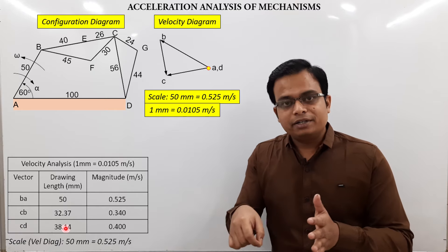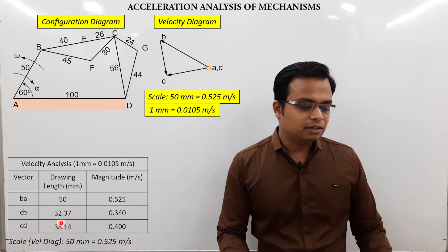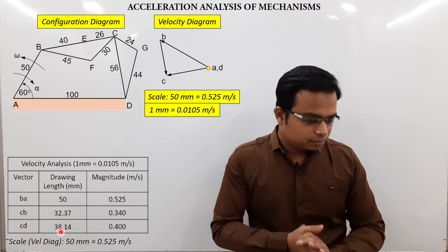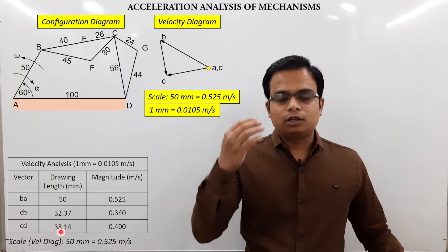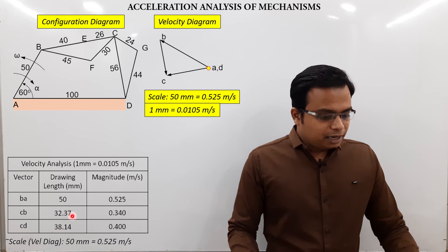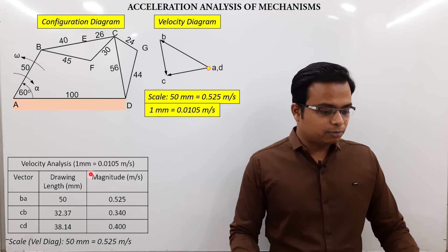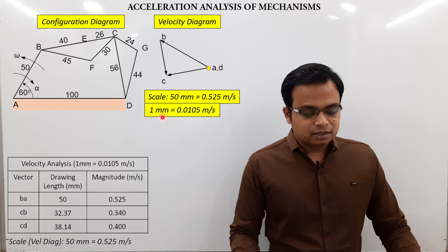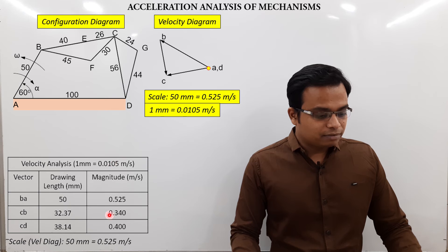You guys are going to implement this on a drawing sheet, so it's not possible to get perfect accuracy. Even if you get 33 mm for 32, or 39–40 mm, that's fine — we are humans. But make sure whenever you are attempting such problems, you must be extremely focused. Now, to convert from millimeters to m/s: multiply by 1 mm = 0.0105 m/s.